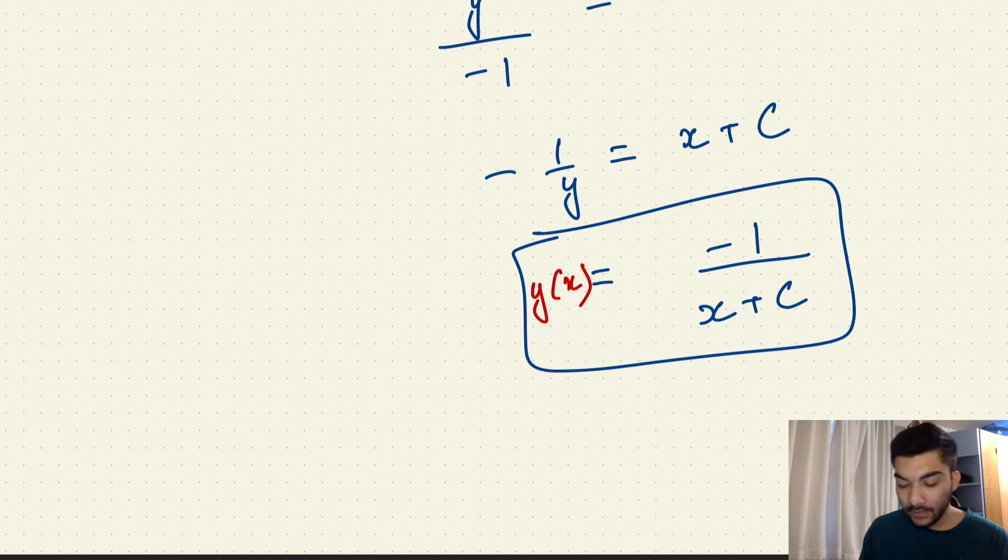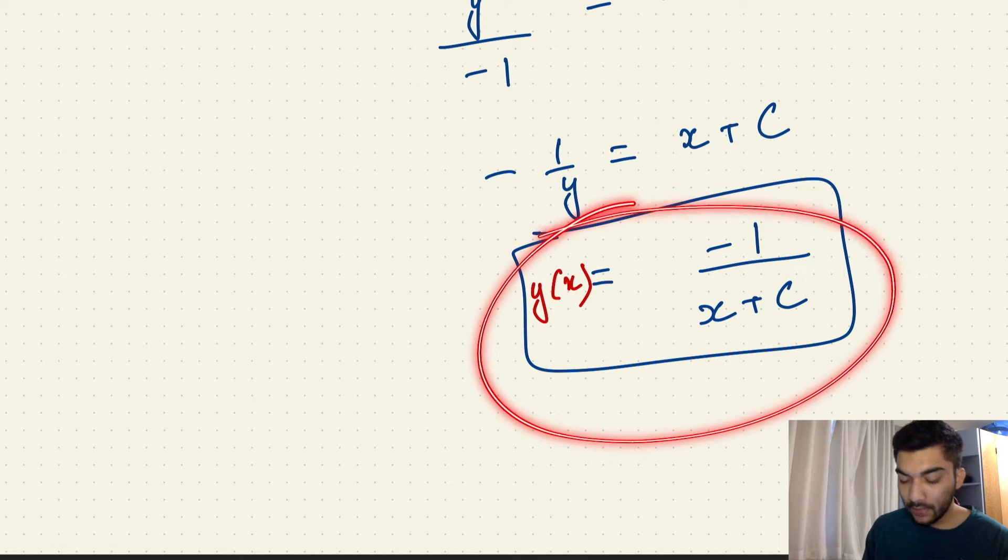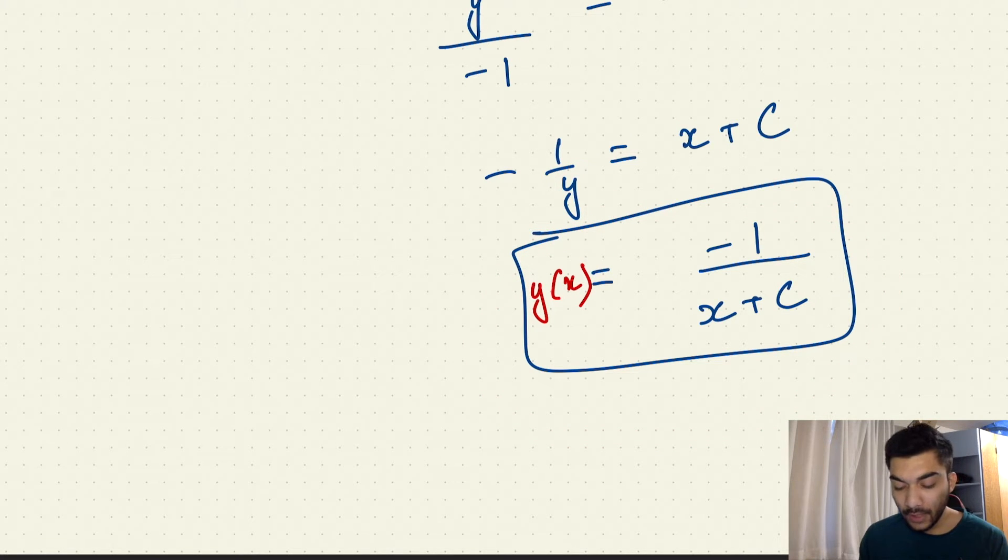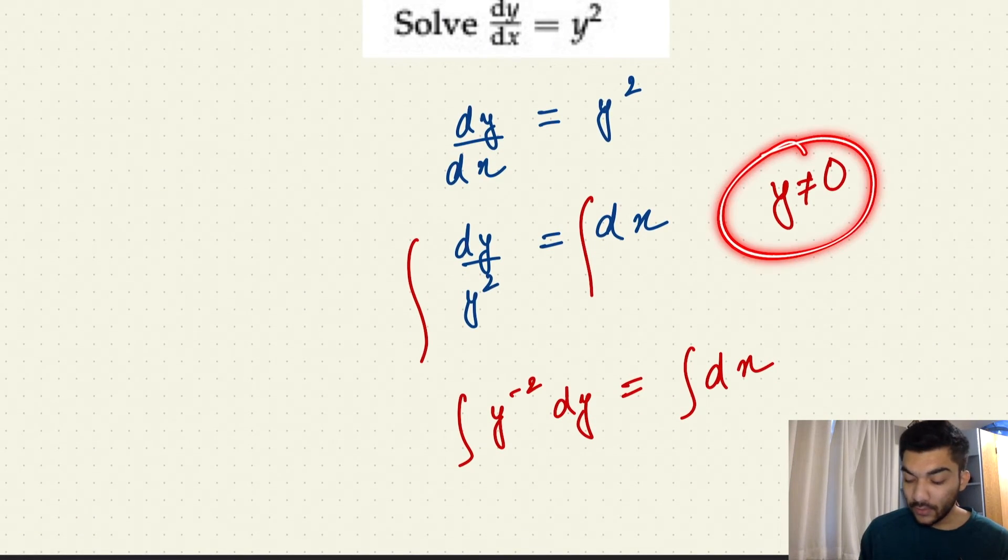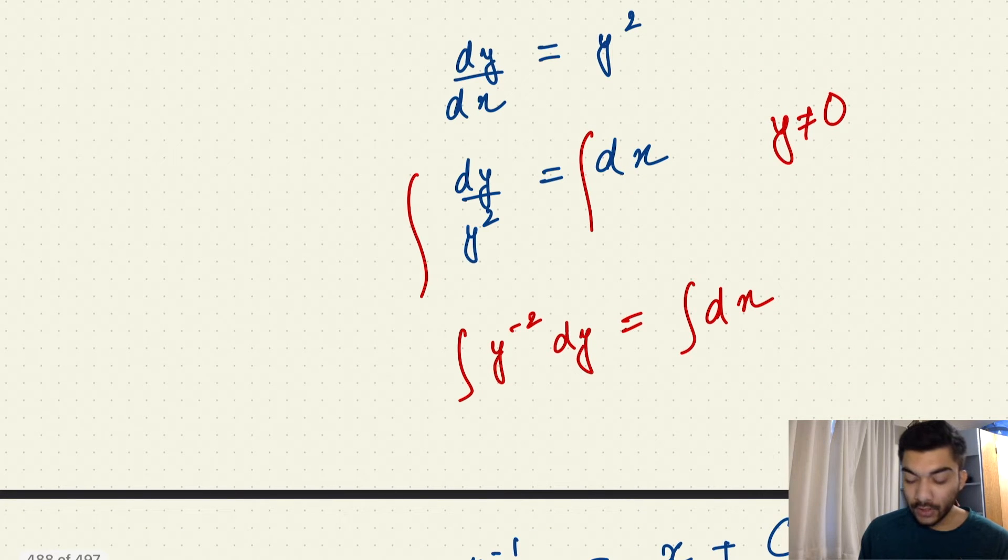If we would have been given an initial condition, we would have just substituted the value of that initial condition in this function expression to get the value of capital C. But the main takeaway from this video was applying the constraints to make sure that your function expressions, your left-hand side and the right-hand side, are always defined.